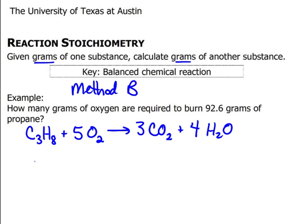Looking at method B, as with the other methods, we're going to write what we're given, 92.6 grams of the propane and X grams of the O2.